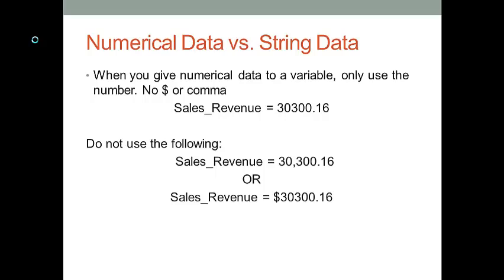Let's see an example. On this slide, I create a variable called Sales_Revenue, and I want to give 30,300.16 as a value to this variable. Then we only need to create a statement as you can see in the upper section on this slide. This is a correct statement of creating a variable in Python.